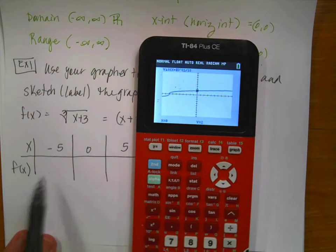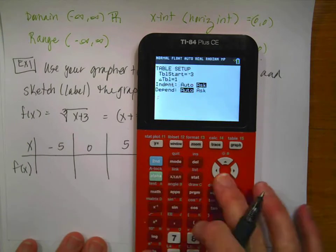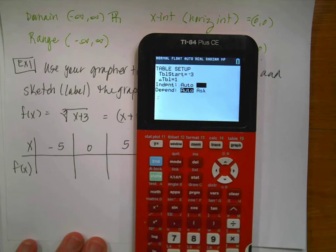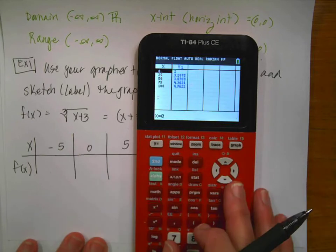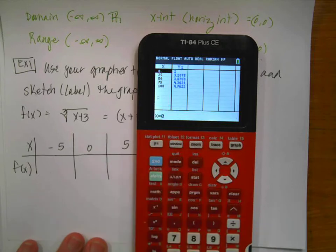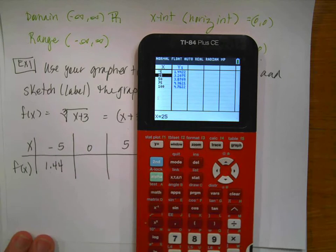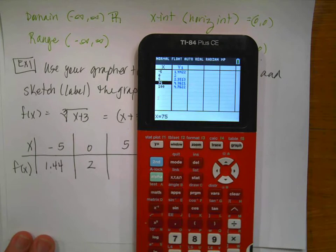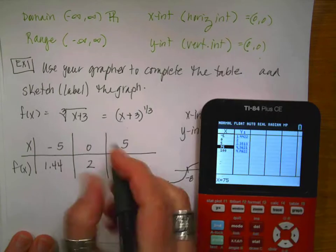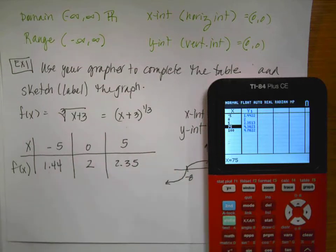So now I'm going to use my calculator to help me fill in the table. I could do the math by hand or I can use my grapher. So I'm going to go to my table and I'm going to tell it to be in ask mode for the independent variable. So then when I go to the table, I'm just going to put in a new value. You can't delete these. You just have to write over it. So I'm going to put in a negative 5. And I get 1.4422. So I'm going to write 1.44. And then I'm going to put in the 0. We already know that it's 2. And then I'm going to put in a 5. And I get that it is 2.35.